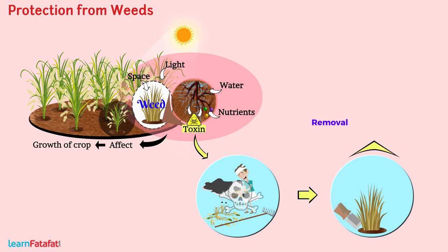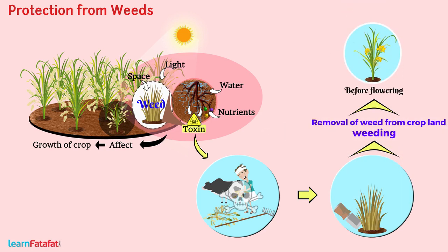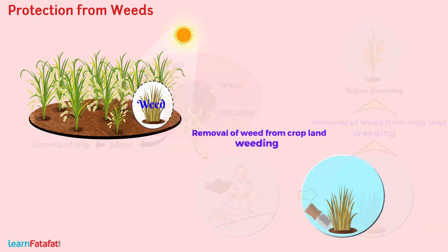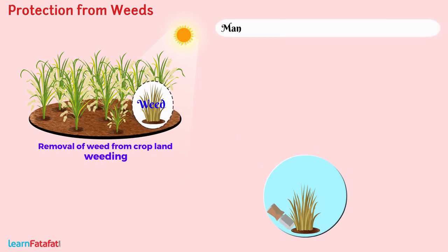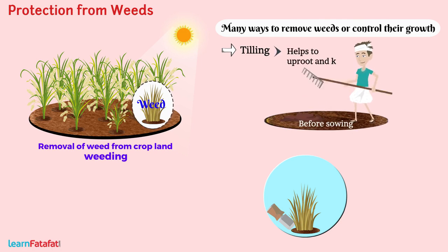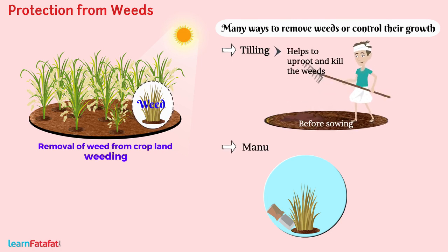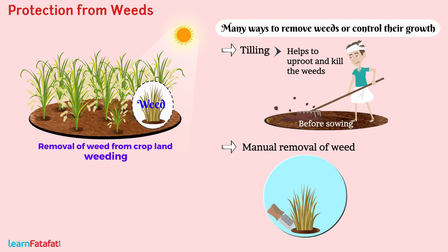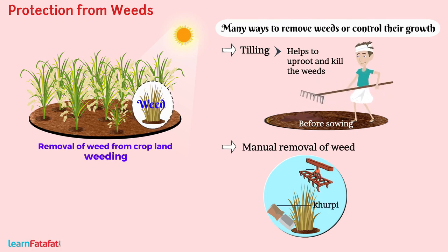The removal of weeds from cropland is called weeding. Weeding must be done before flowering of crop plants. There are many ways to remove weeds or control their growth. Tilling before sowing helps to uproot and kill the weeds. Manual removal of weeds is done by trowel, i.e. khurpi, or seed drill.